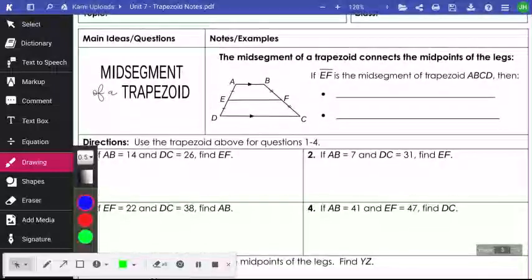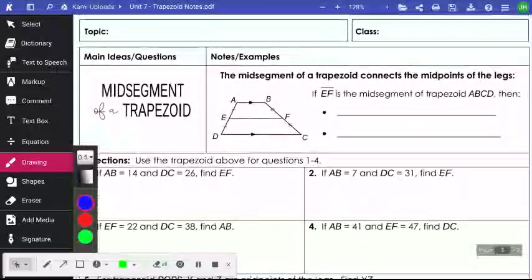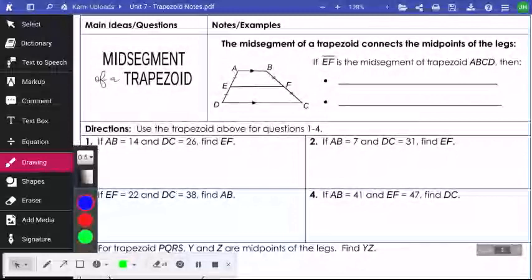Okay, so we are finishing up the trapezoid notes. We started them yesterday with isosceles and non-isosceles trapezoids, and today we're going to talk about midsegment of a trapezoid.